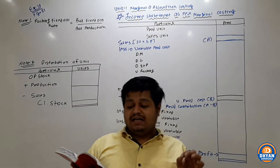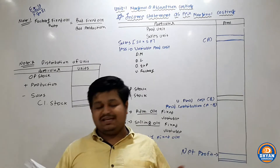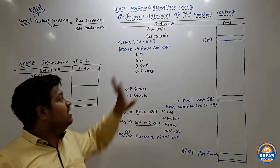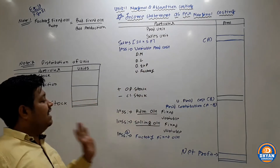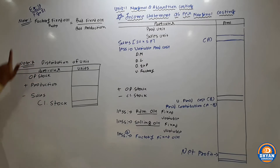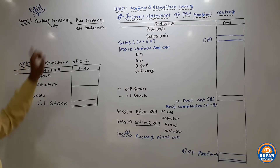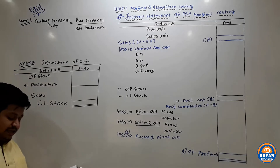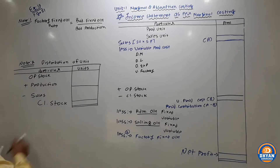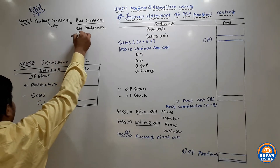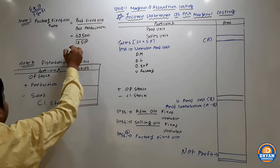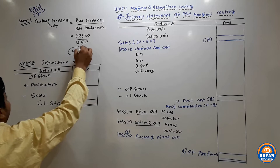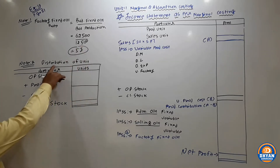We are asked to prepare a statement of cost on both absorption and marginal basis. We prepare our notes. Note 1: Factory Fixed Overhead Rate = Budgeted Fixed Overhead ÷ Budgeted Production = Rs. 62,500 ÷ 12,500 = Rs. 5 per unit.